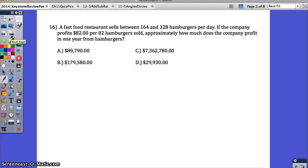Last problem for this video, 16. A fast food restaurant sells between 164 and 328 hamburgers per day. If the company profits $82 per 82 hamburgers sold, approximately how much does the company profit in one year from hamburgers? This problem is worded kind of different. It's actually worded a little bit tricky. So break it apart. The company profits $82 per 82 hamburgers. What does that really tell you? They're saying it in a more complex way. How much do they make off of each hamburger? If it's $82 per 82 hamburgers, then that's actually $1 per hamburger, per one hamburger.